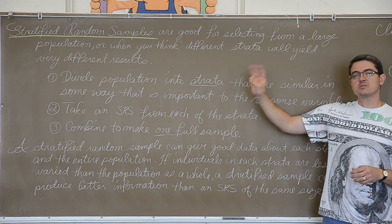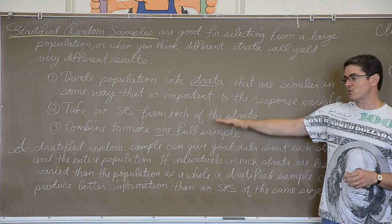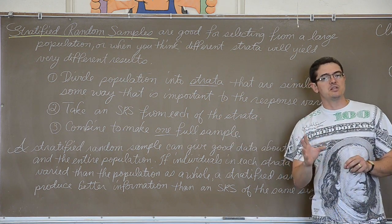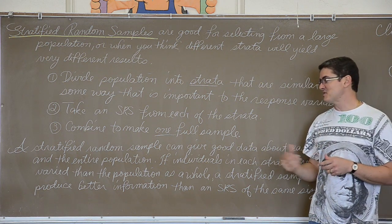and I combine an SRS out of each of those four strata to make one full sample, I would be forced and be guaranteed to have a few seniors, a few sophomores, juniors, and freshmen. I don't know why I went out of sequence there.